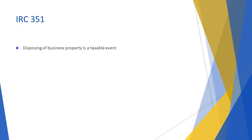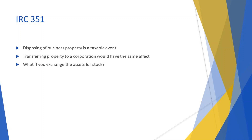Under normal circumstances, disposing of business property is a taxable event. Transferring business property to a corporation would have the same effect — the transaction is treated as if you sold the property to the corporation in return for cash. What if you exchanged those business assets for stock? The difference between the stock value received and the tax basis in the property transferred to the corporation will result in a gain or loss.